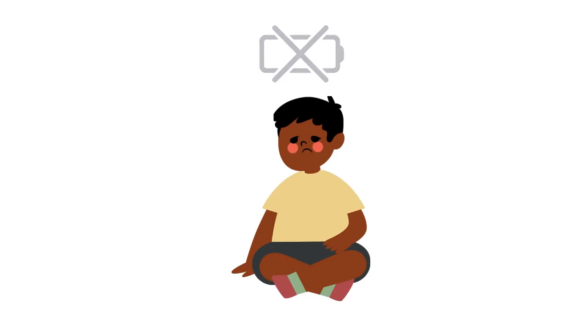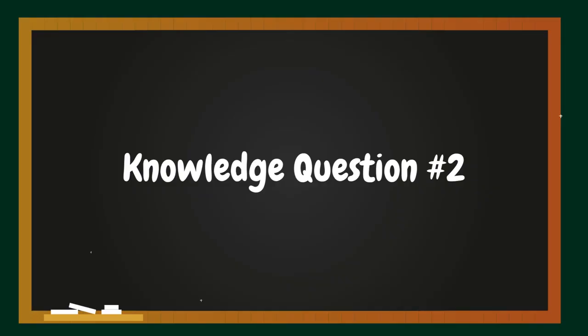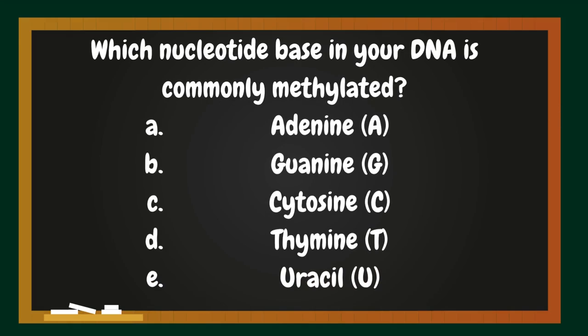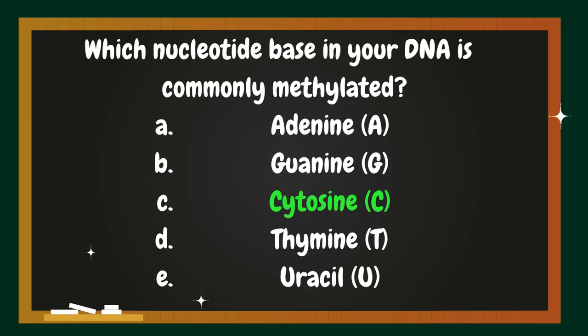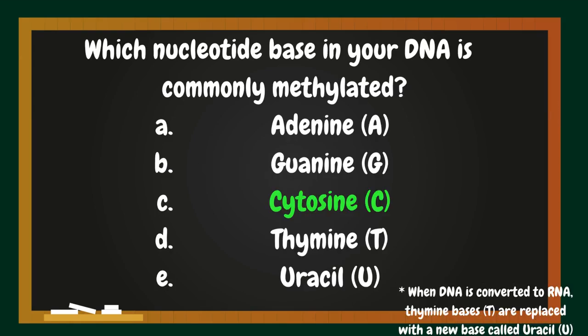Wow, that was a lot of information. How about a quick knowledge check-in? Great work! The correct answer is C. As mentioned earlier, cytosine is the most commonly methylated base in your DNA.